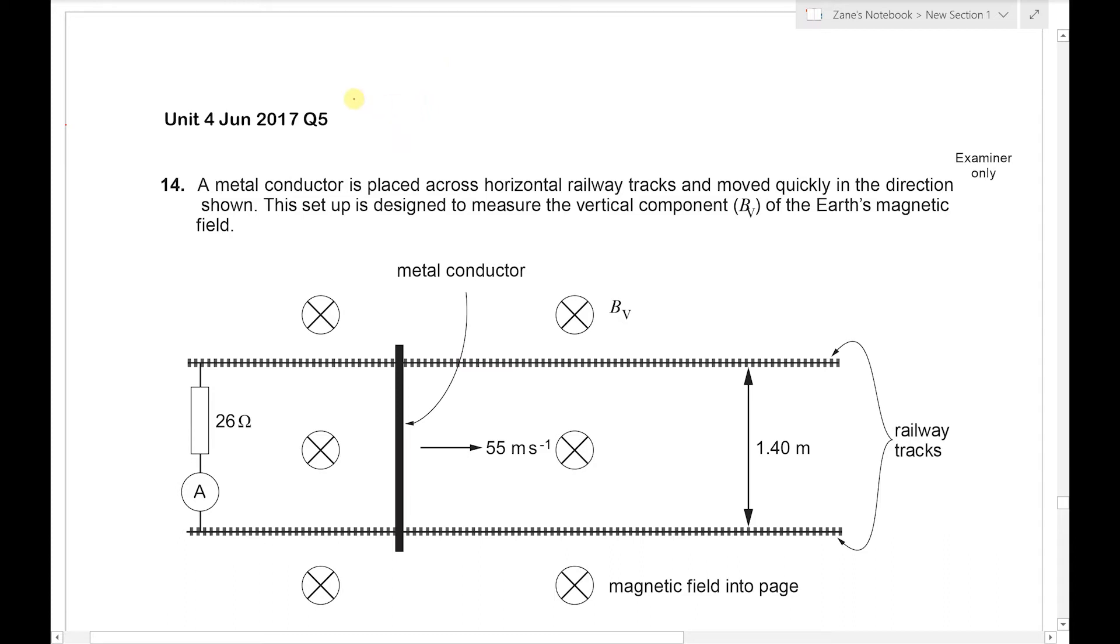What we've got is a metallic conductor placed along horizontal railway tracks and moved quickly in the direction shown, and the setup is designed to measure the vertical component BV of the Earth's magnetic field.